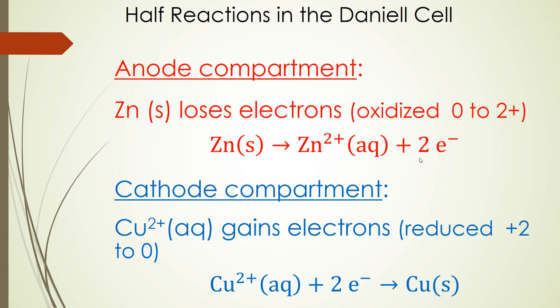In the anode compartment, we have zinc solid losing electrons. It's losing two electrons in this reaction for each mole of zinc metal, and it's oxidized from zero for zinc solid to zinc 2+ for the ion. Notice that the sulfate is not included in the half reaction, and that's because we never include spectator ions. The sulfate ions are there for charge balance in the reaction, but they're not involved in the electrochemical cell at all in function, so we just leave those out.